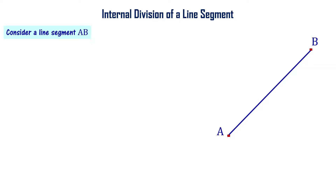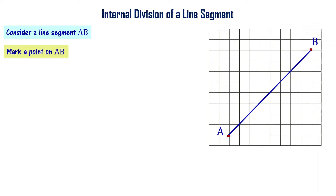Let us first understand internal division of a line segment. Let us consider a line segment AB. Now let's mark a point on AB. This particular point is dividing AB into two equal parts. It is also dividing AB into two unequal parts. For example, point P, where AP is much bigger than BP.